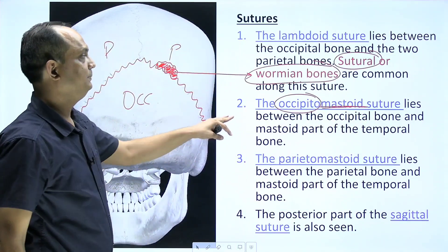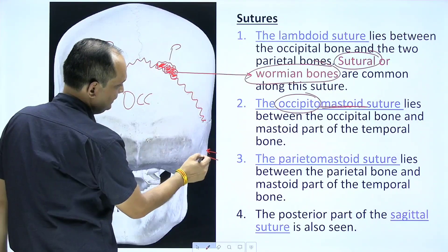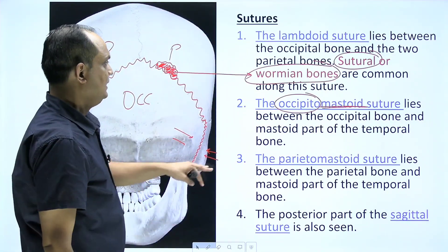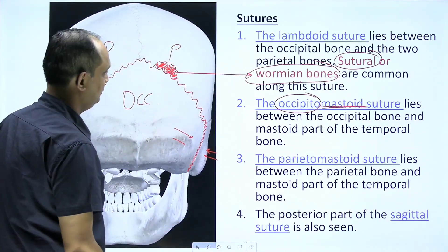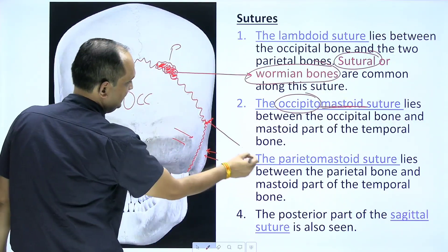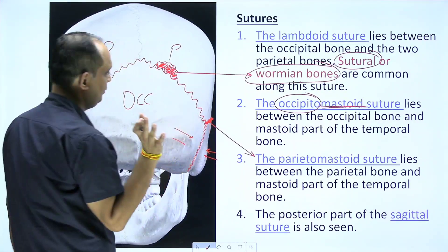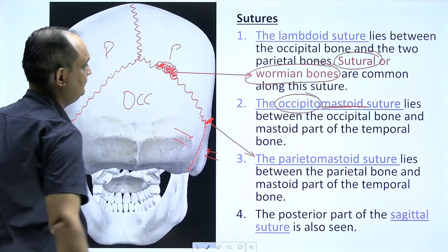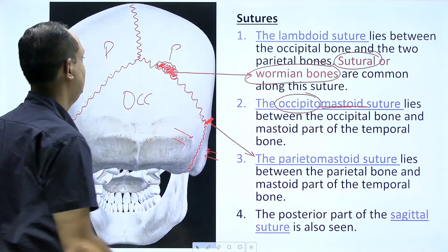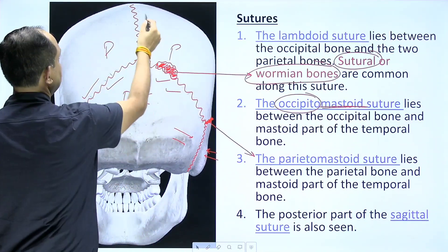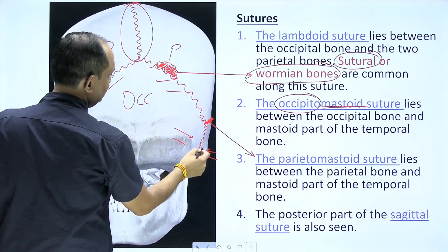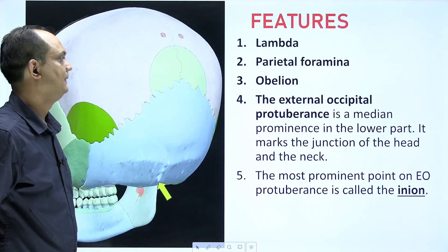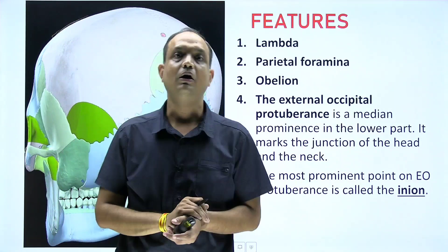The next joint is between the occipital bone and the mastoid part of the temporal bone, known as the occipitomastoid suture. Then you have the parietomastoid suture, lying between the parietal bone and the mastoid bone — it is very small in norma occipitalis. You will also have the posterior part of the sagittal suture visible here.